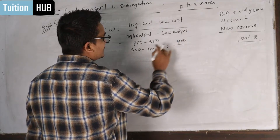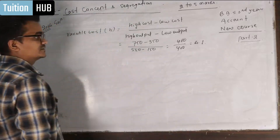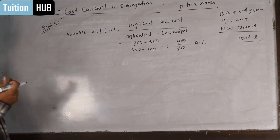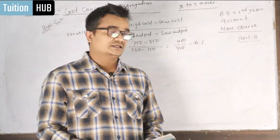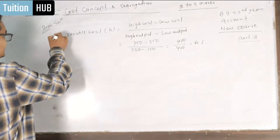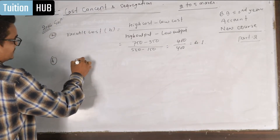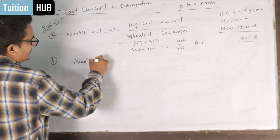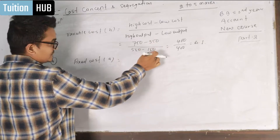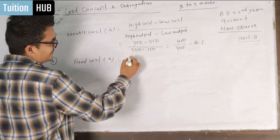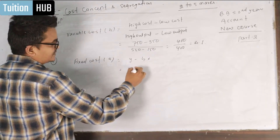The variable cost is high cost minus low cost. The variable cost is not for high cost. Fixed cost is high cost. The variable cost is high cost minus low cost, the variable cost for high cost.